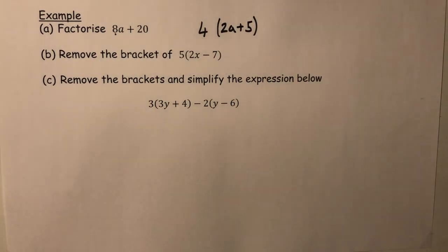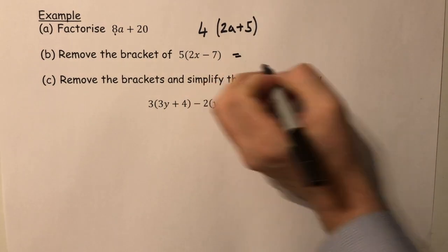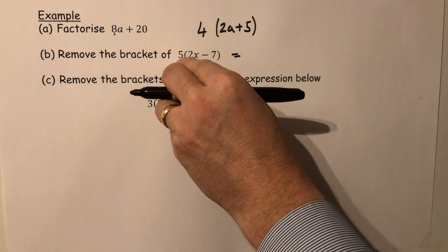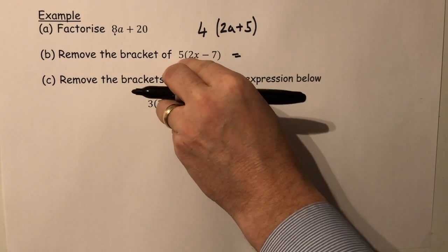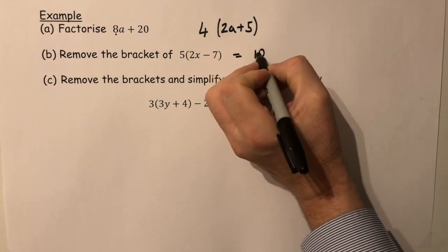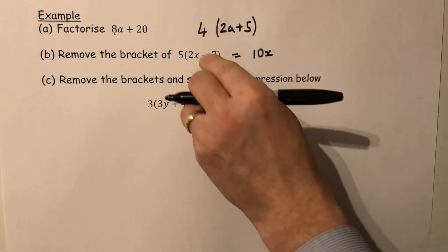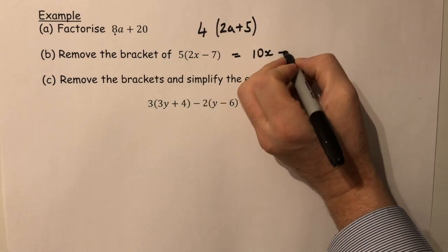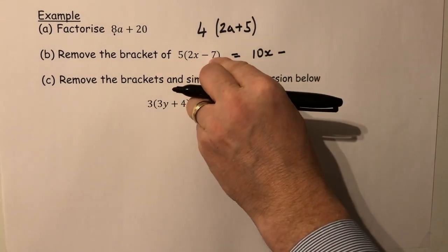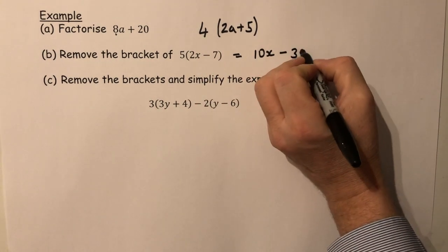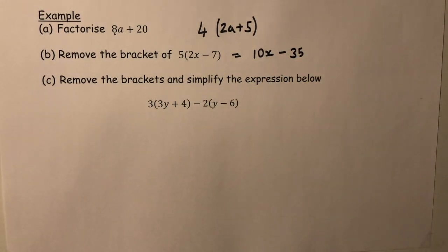Reverse to remove the bracket. Five times the 2x, or five times the two, is ten, so 10x, minus sign, so minus sign, and five times the seven is thirty-five. Bracket removed.